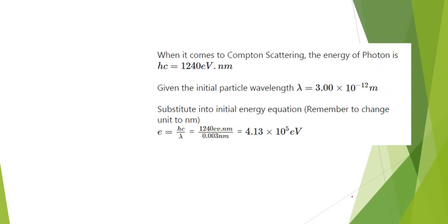When it comes to Compton scattering, the energy of the photon is hc equals to 1240 electron volt dot nanometer. This is just the constant. Given the initial particle wavelength from the question is 3.0 times 10 to the power of negative 12, we're going to change the unit to become lambda, and then we substitute it into initial energy equation.